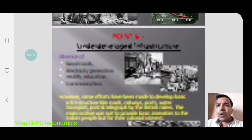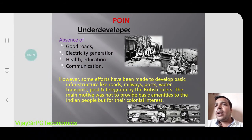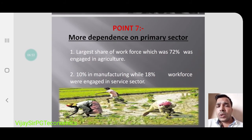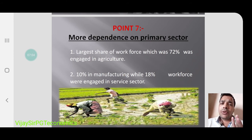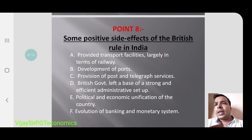There was also a lack of public health facilities. Good roads, electricity generation, health, and education were all lacking. Along with that, there was more dependence on the primary sector — around 84 to 85 percent of people were dependent on agriculture at that time, with 72 percent directly engaged in it. About 10 percent were in manufacturing.